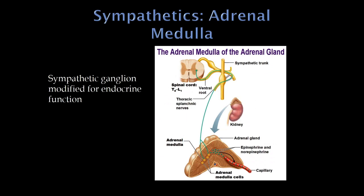Another anatomically interesting part of the sympathetics is the adrenal medulla, which you should think of as a displaced autonomic ganglia — it's part of the sympathetic system. The preganglionic fiber passes through all of the ganglia we've discussed — the paravertebral and prevertebral — and goes all the way out to the adrenal medulla, which is just a displaced sympathetic ganglia.